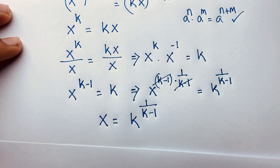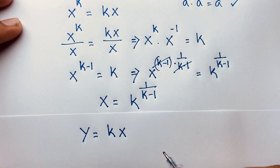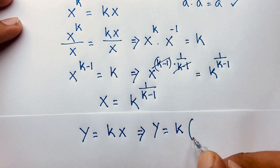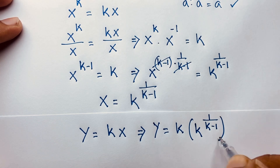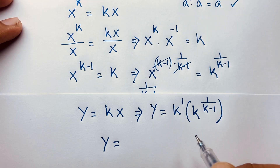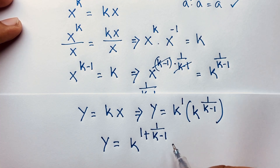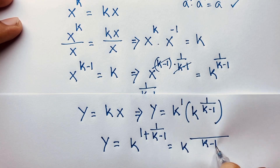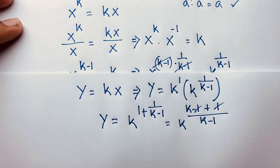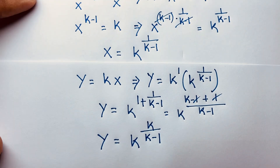Remember we let y equal to kx. So substituting the value of x, y is equal to k times k to the power 1 over k minus 1, which is k to the power 1 plus 1 over k minus 1. Using the least common denominator k minus 1, the exponent becomes k over k minus 1. So y is equal to k to the power k over k minus 1.